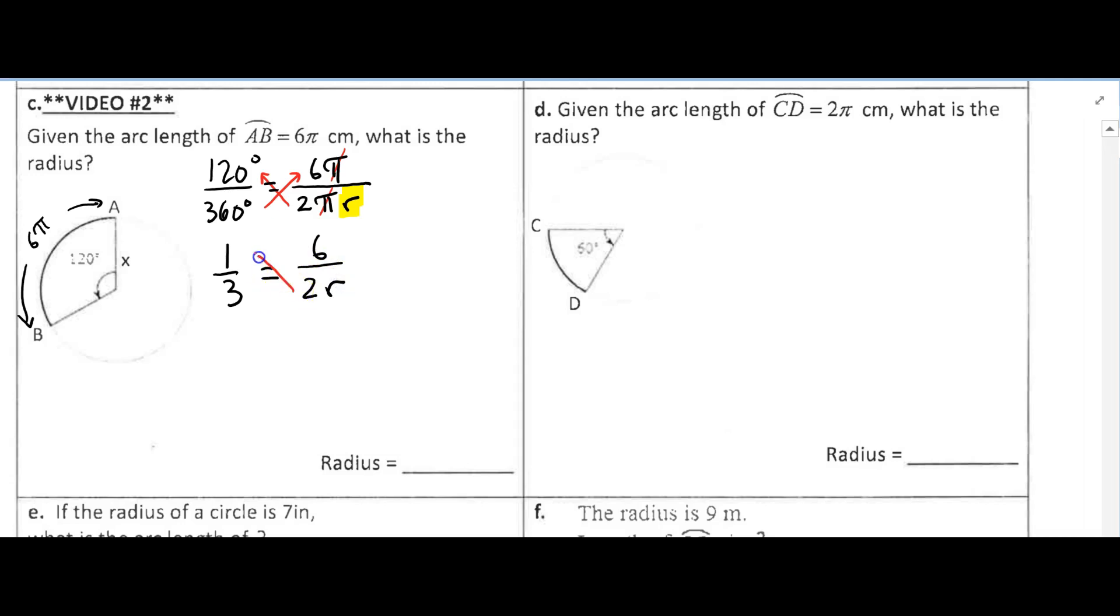Now I can cross multiply. We could have cross multiplied in the first step, we just would have larger numbers. So 2R times 1 is 2R, and 3 times 6 is 18, divide both sides by 2, and we get that R is 9, so our radius is 9, and our units were centimeters.